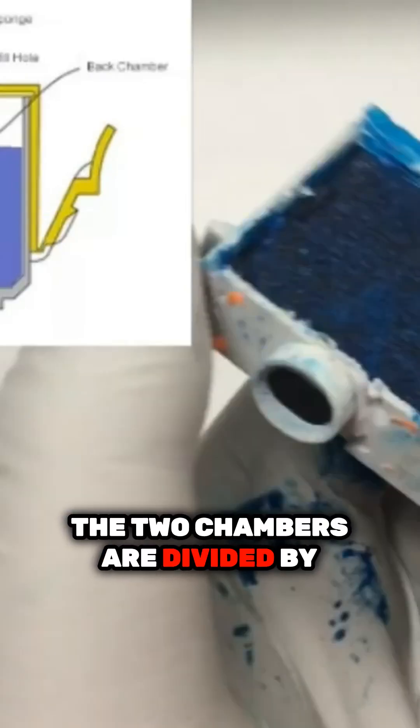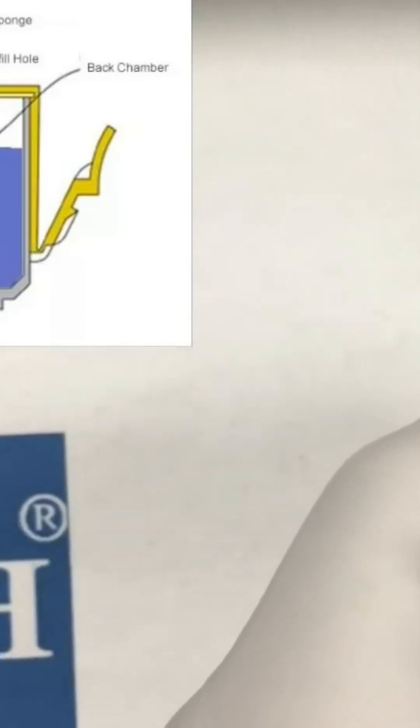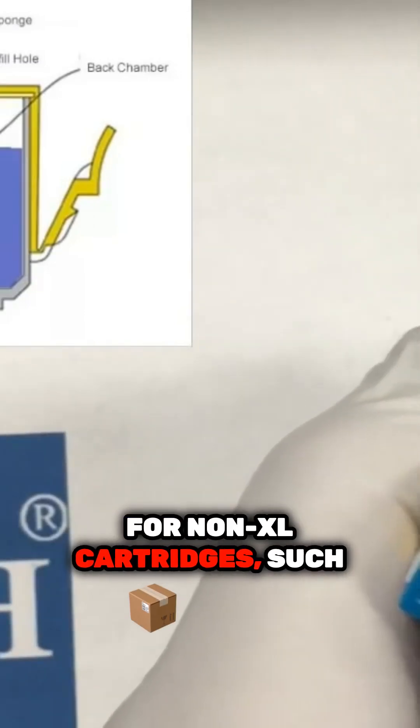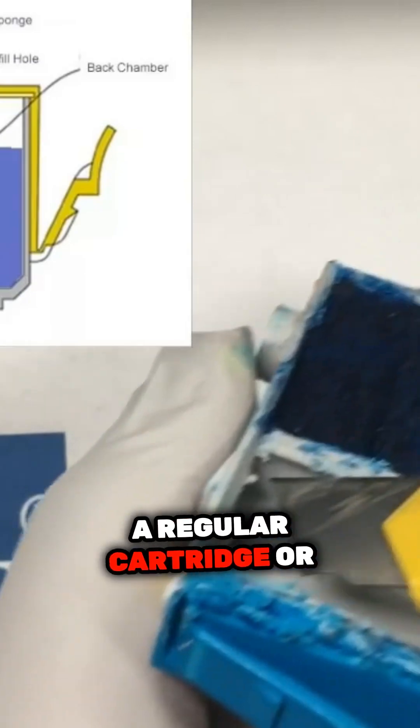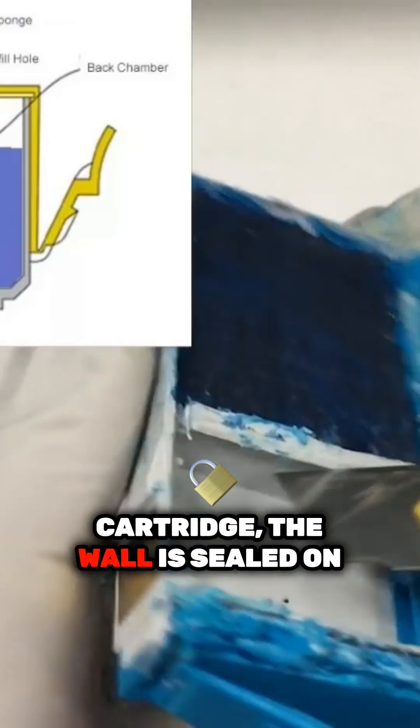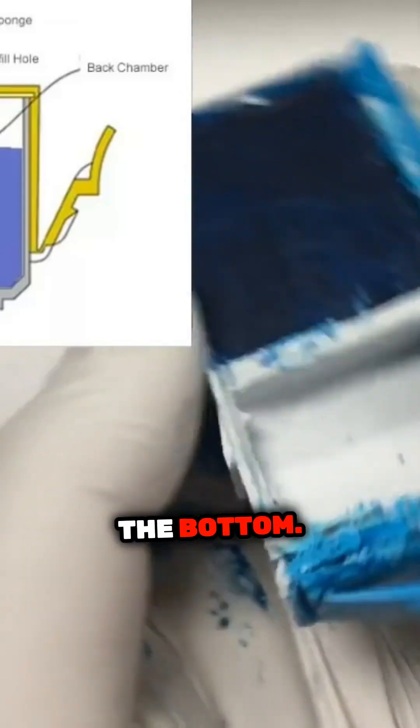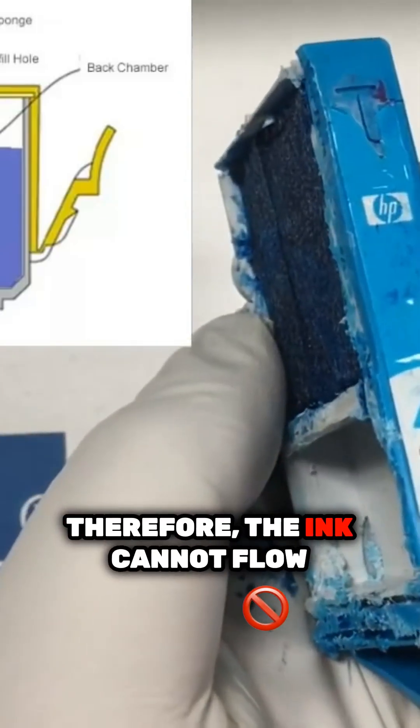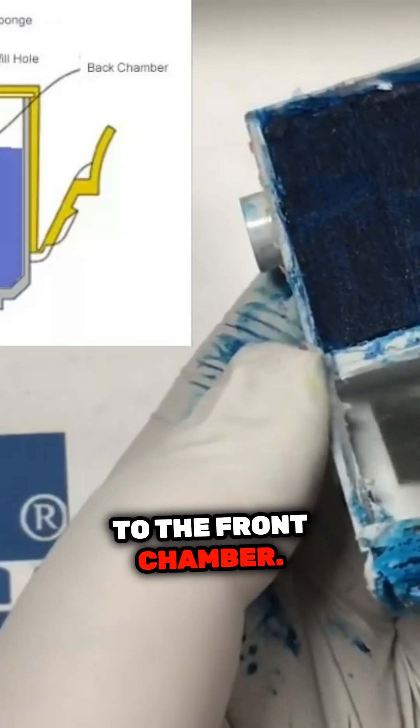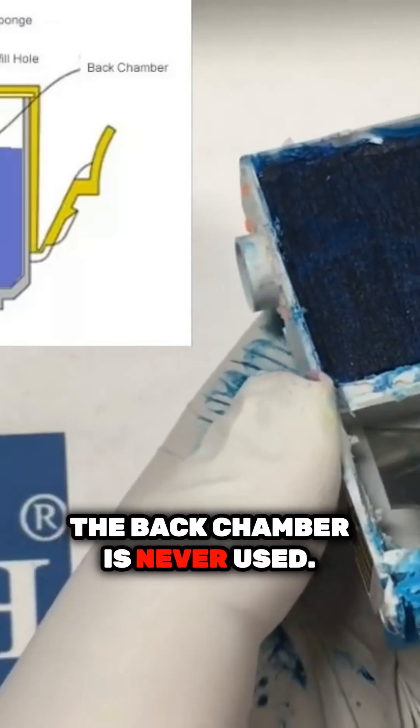The two chambers are divided by a wall for non-axial cartridges, such as a regular cartridge or startup cartridge. The wall is sealed on the bottom. Therefore, the ink cannot flow to the front chamber. The back chamber is never used.